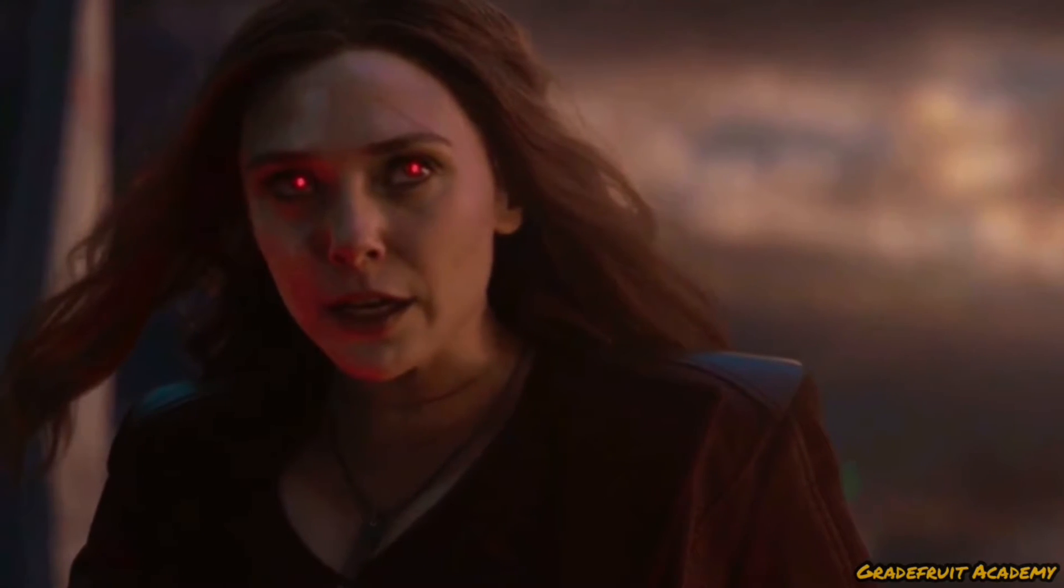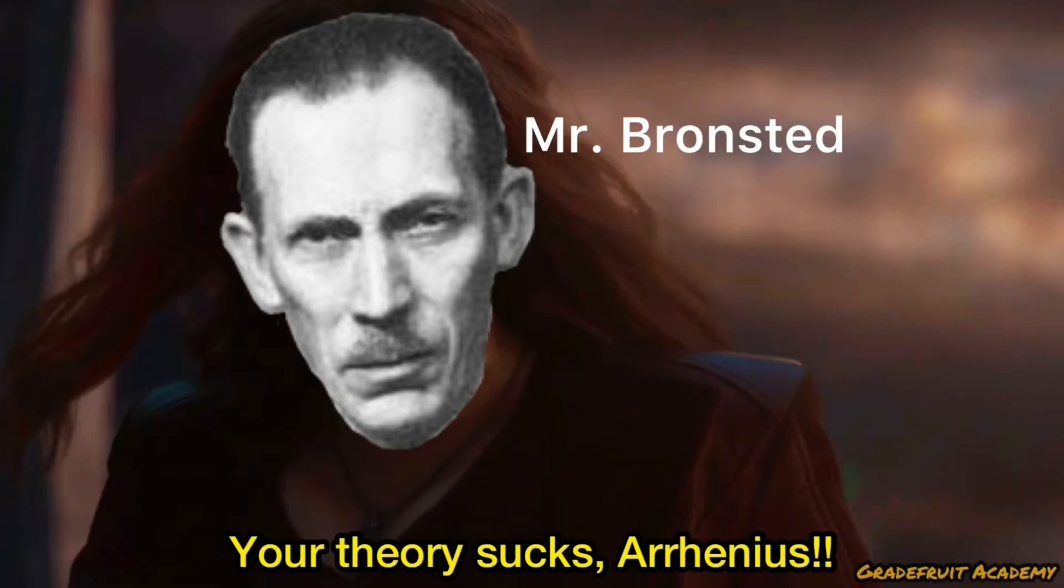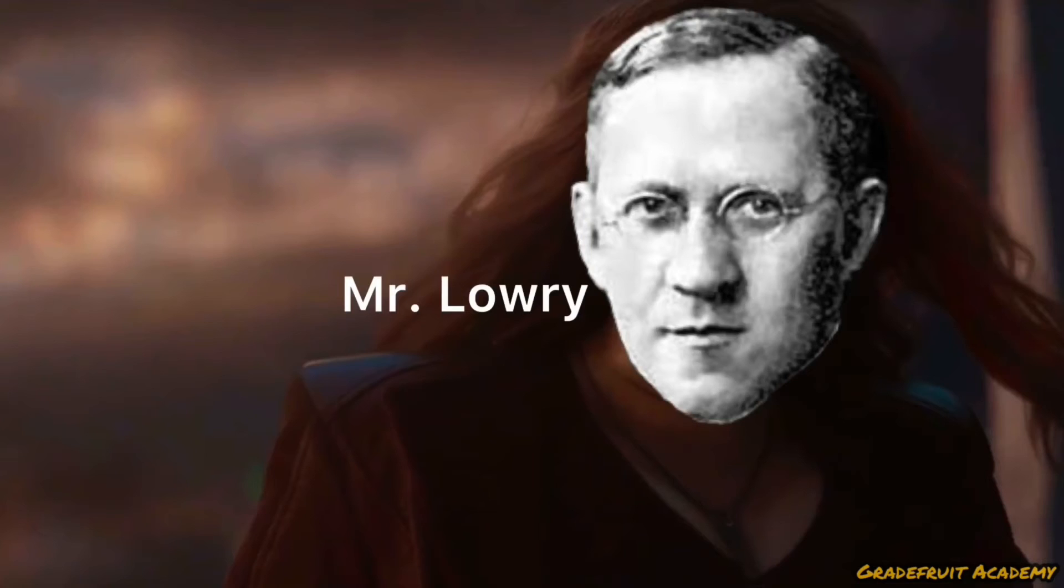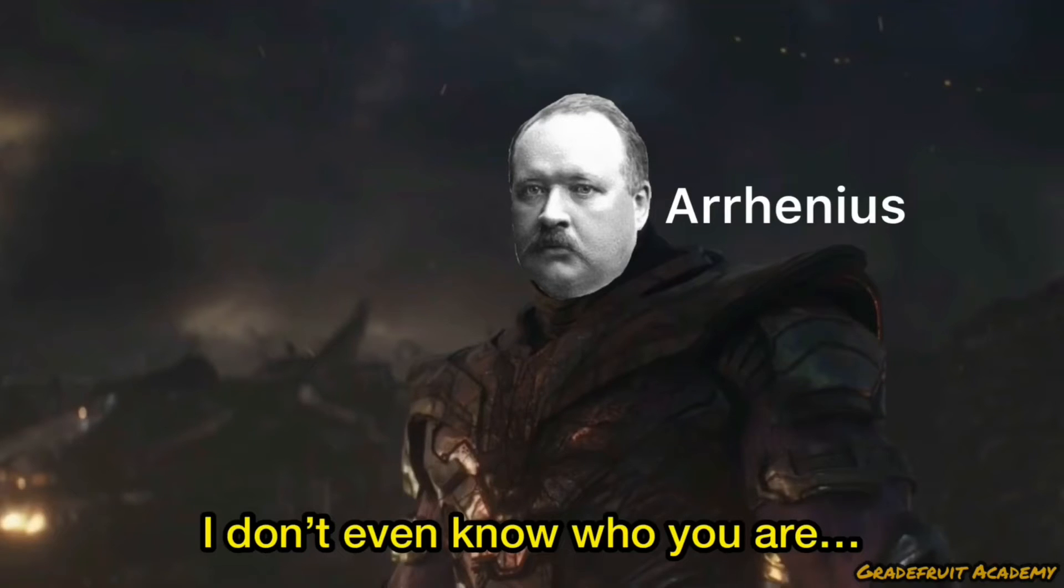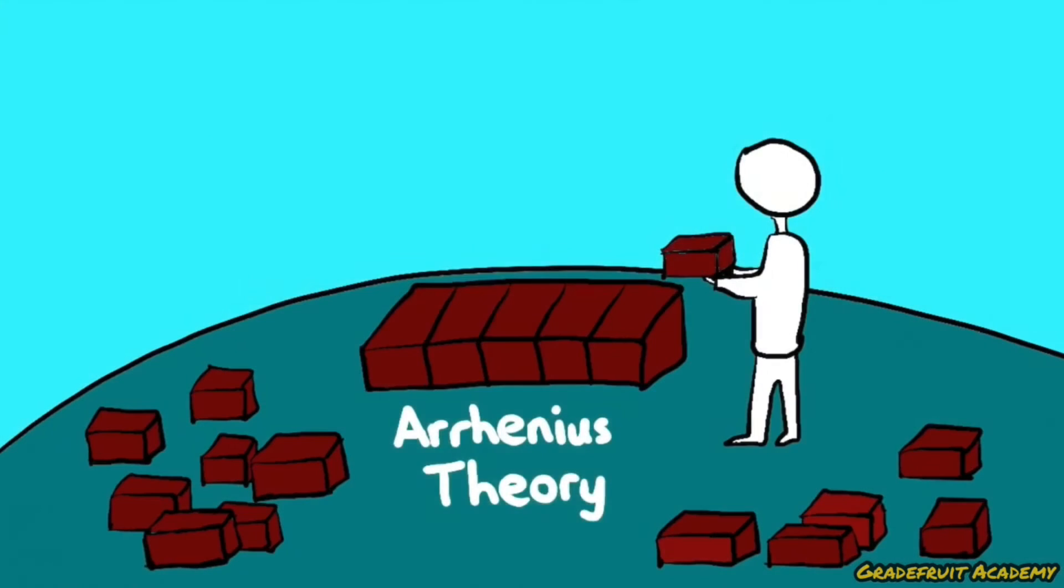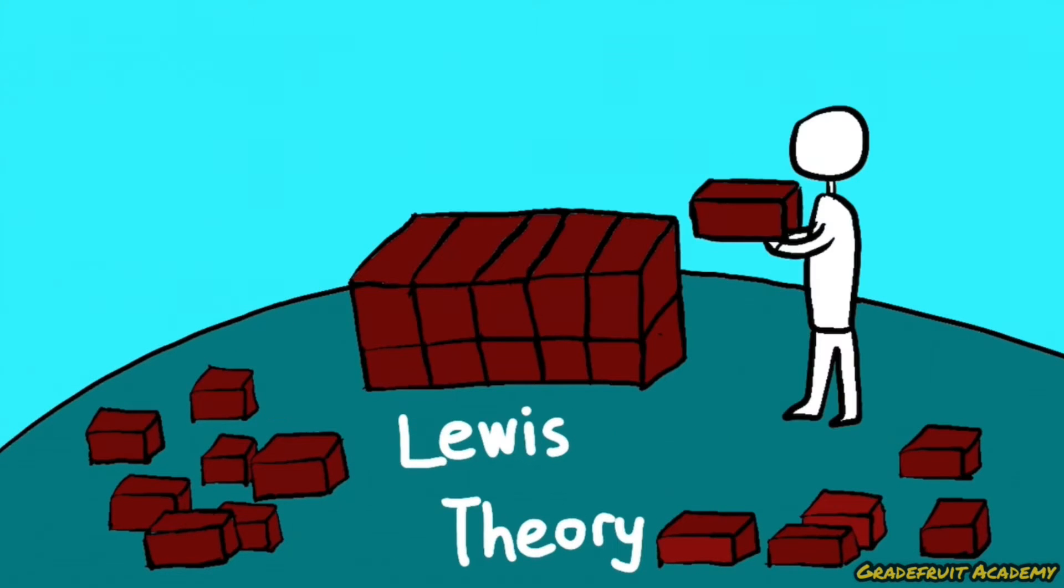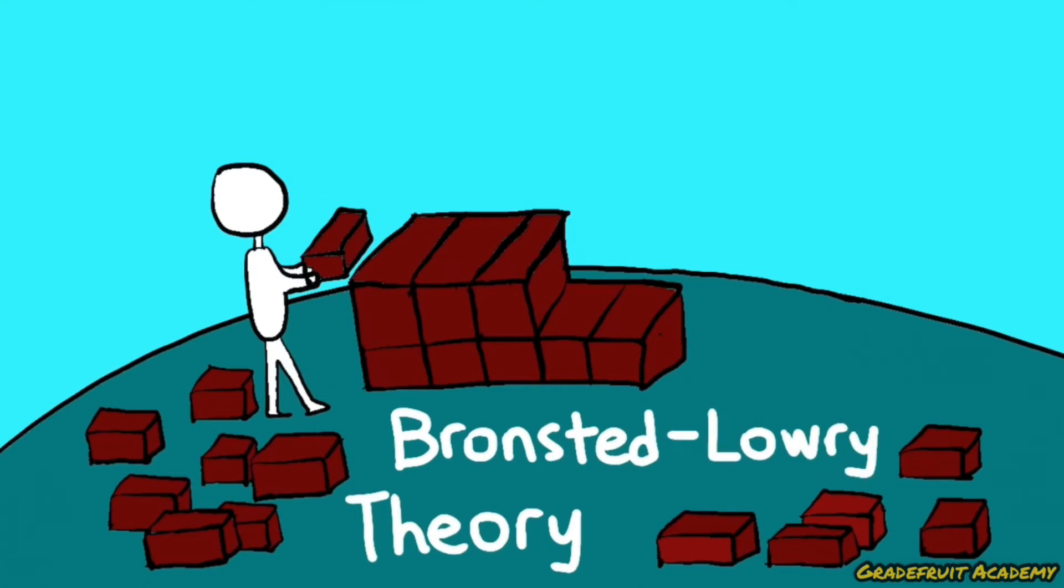However, this theory by Arrhenius is not perfect as there are limitations to it. That's because it cannot explain the basic properties of other substances such as ammonia. Hence, new definitions were introduced to build on the current definition so that it covers a greater scope to define what is an acid or a base.